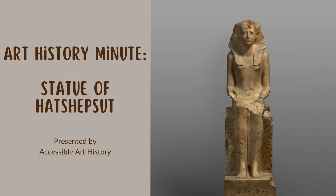Welcome back to the Accessible Art History YouTube channel. In this week's episode of Art History Minute, I'm going to be showcasing a work that shows one of my favorite historical figures. Hatshepsut was one of the pharaohs of the 18th dynasty of ancient Egypt. Unusually, she held power in her own right during the minority of her stepson. So to learn more about her, keep on watching.